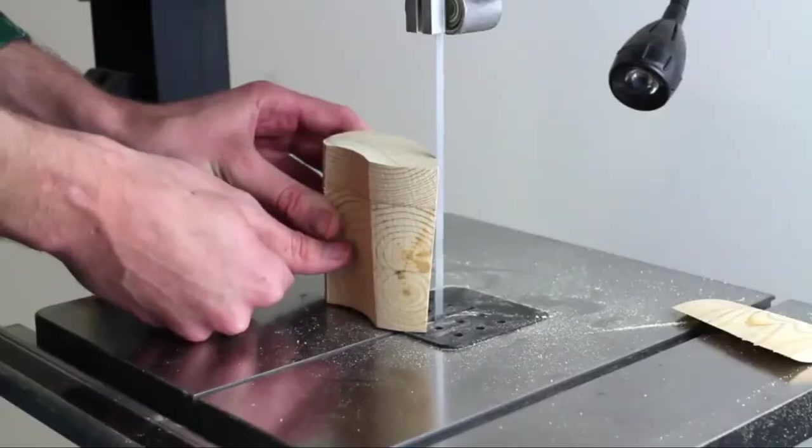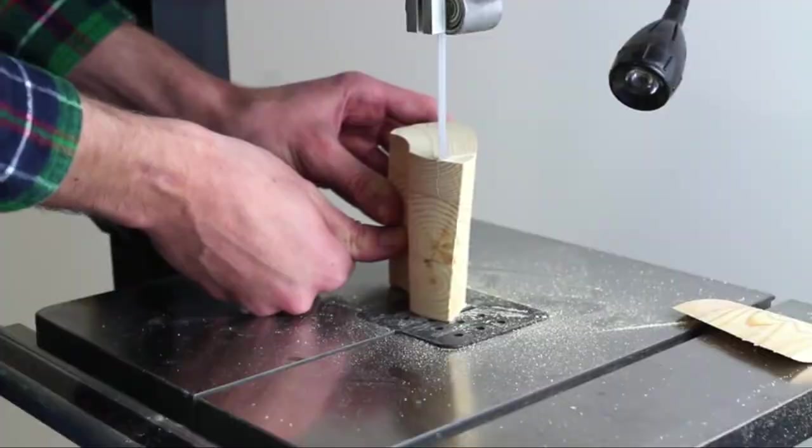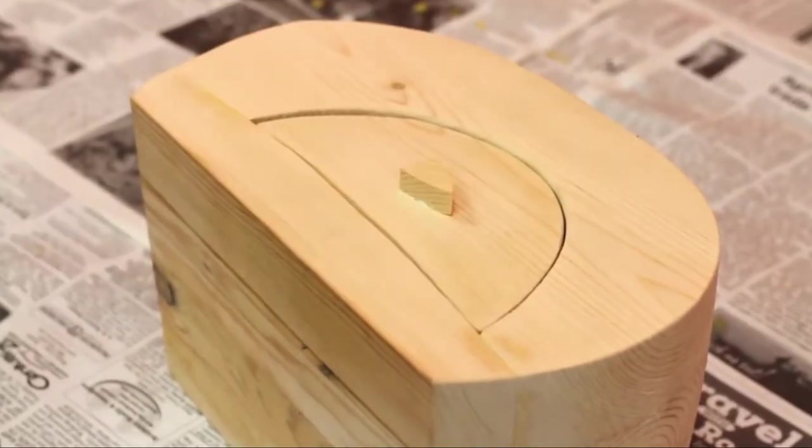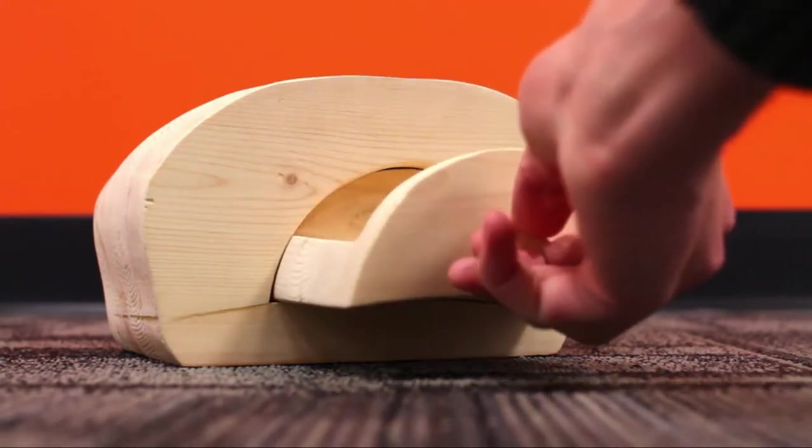Finally, using the excess scrap, make a little handle for your drawer. Carve out the handle with the bandsaw and then glue it to the front of your bandsaw box. Look at that cute little guy. Once the handle has a chance to dry, your bandsaw box is complete.